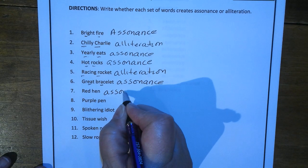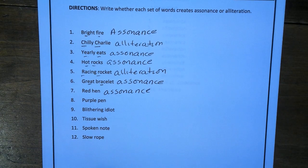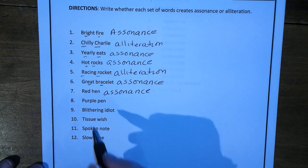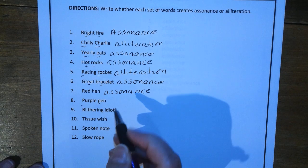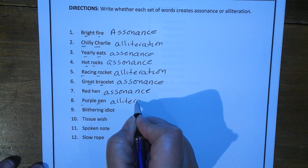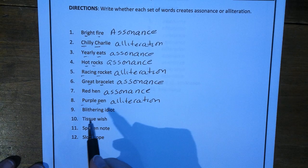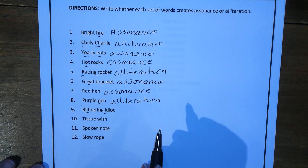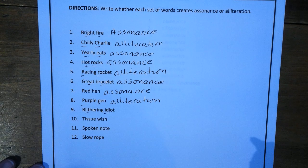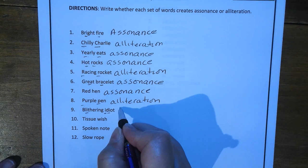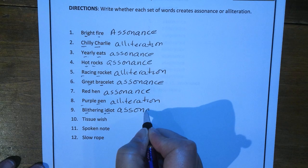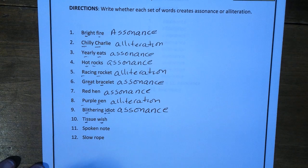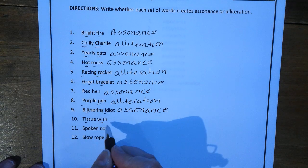Remember that both assonance and alliteration make words sound better — they're sound devices. Purple pen — that's pretty easy, that's alliteration, that P sound being repeated. Blithering idiot — you've got a short I here and here and actually here in 'idiot,' so that's assonance. Tissue wish — see the short I again? It even goes with the S sound with it. Assonance.